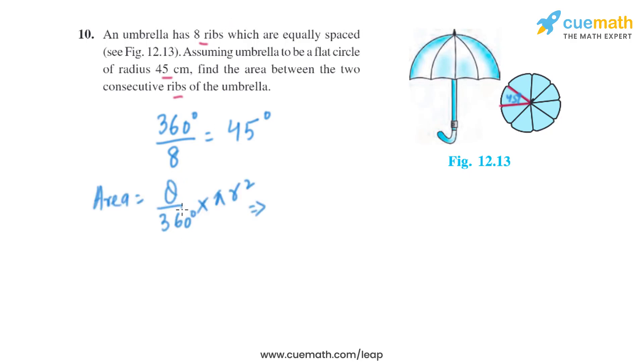We have the value of theta, that is 45 degrees divided by 360 degrees, multiplied by 22 by 7, and multiplied by the radius. The radius is 45 centimeters, that is given in the question, so that is the square of 45.